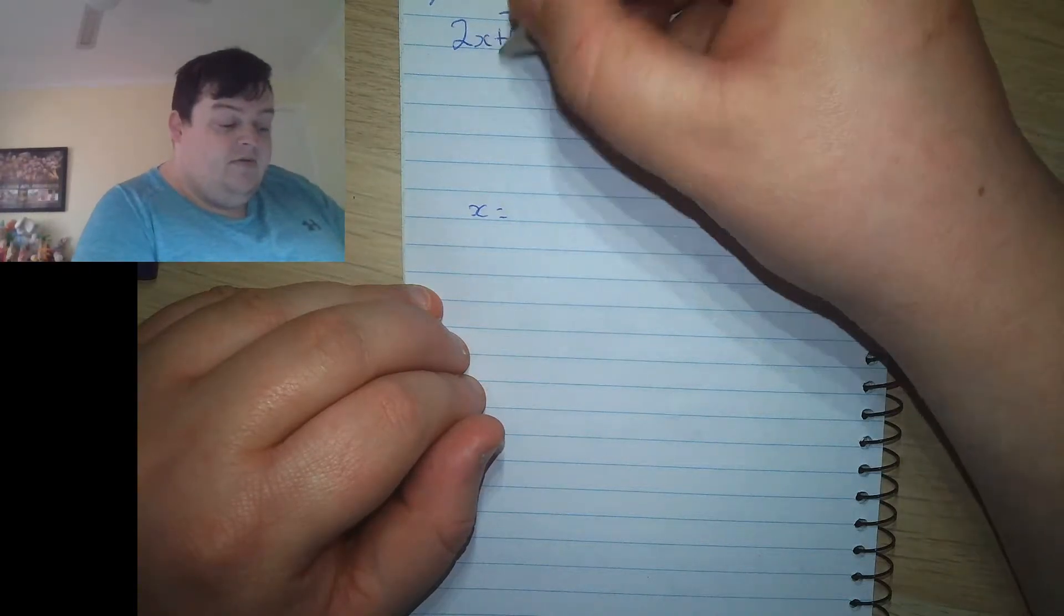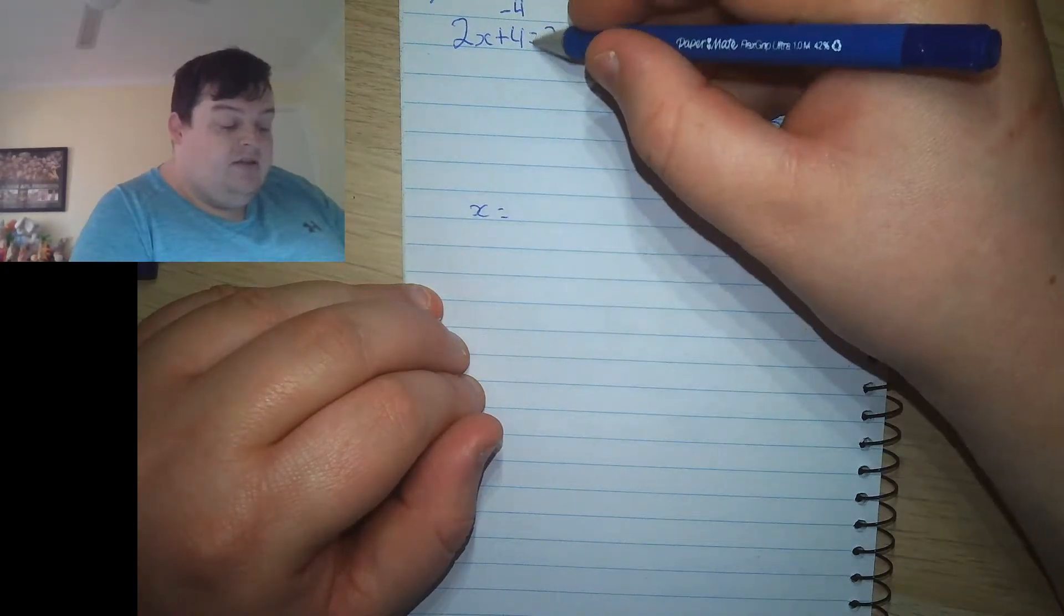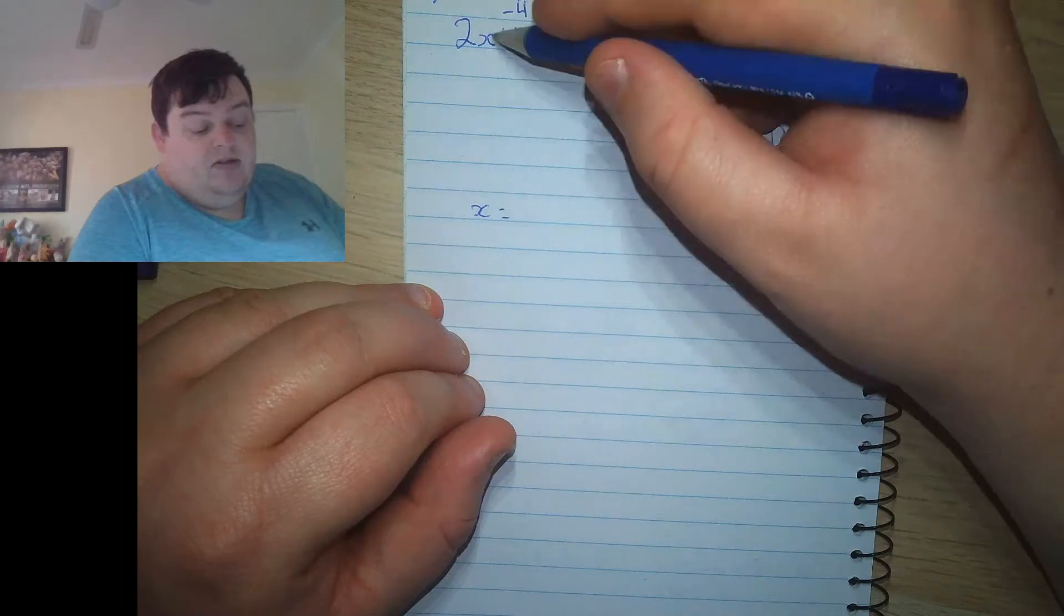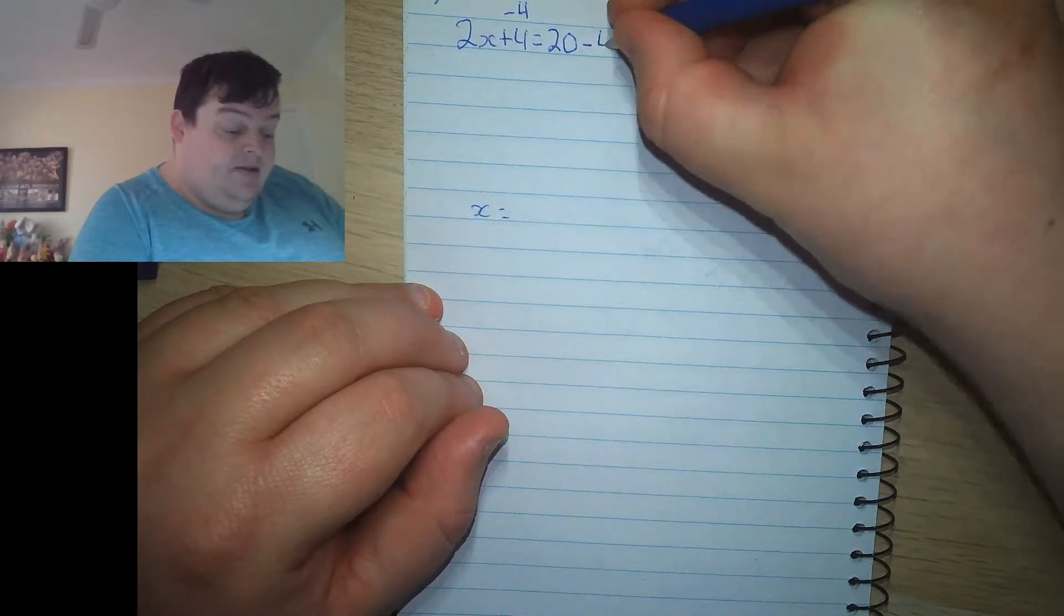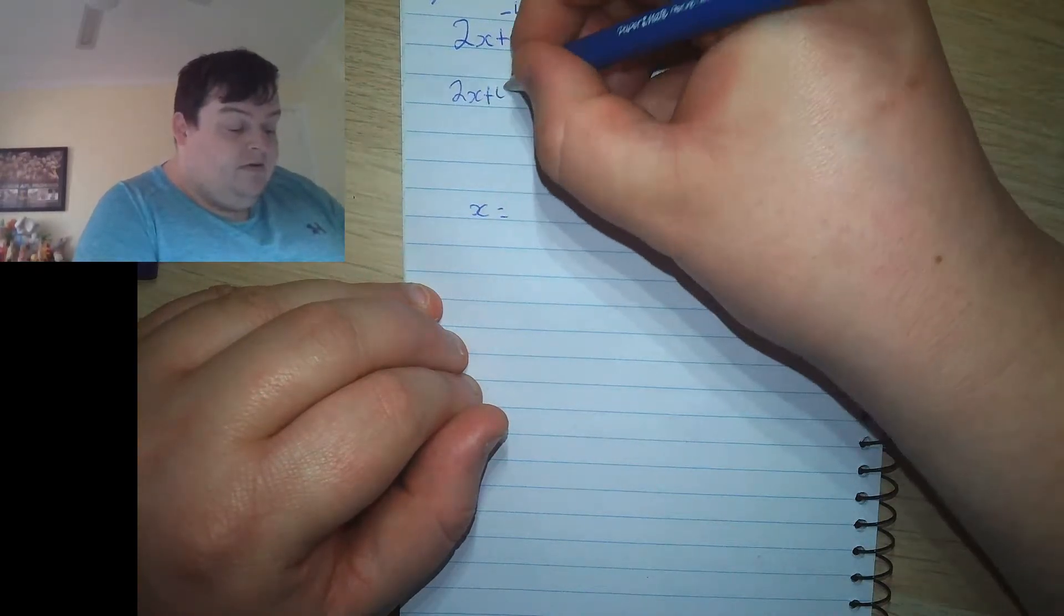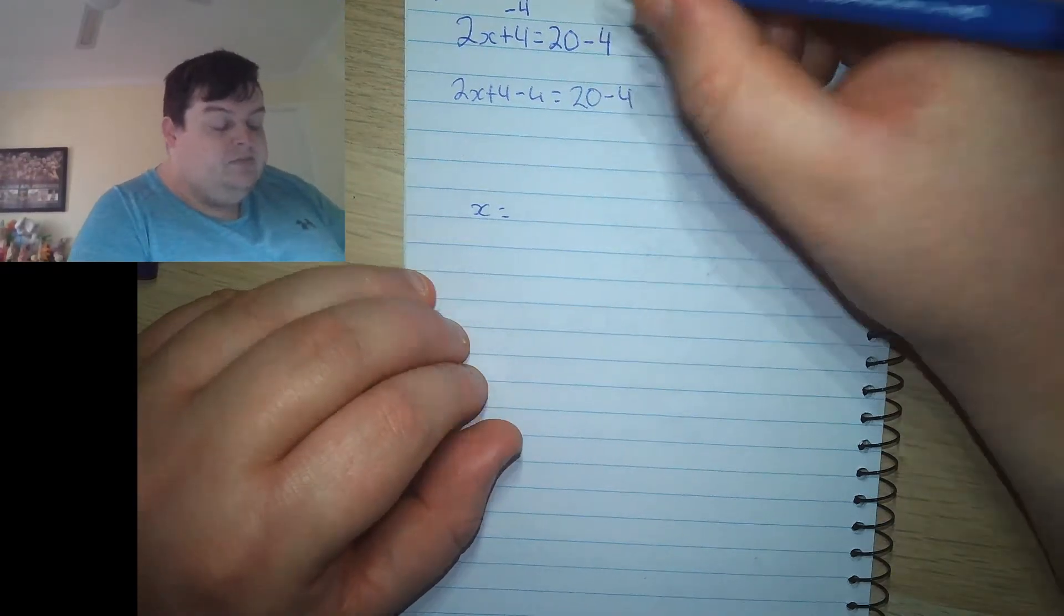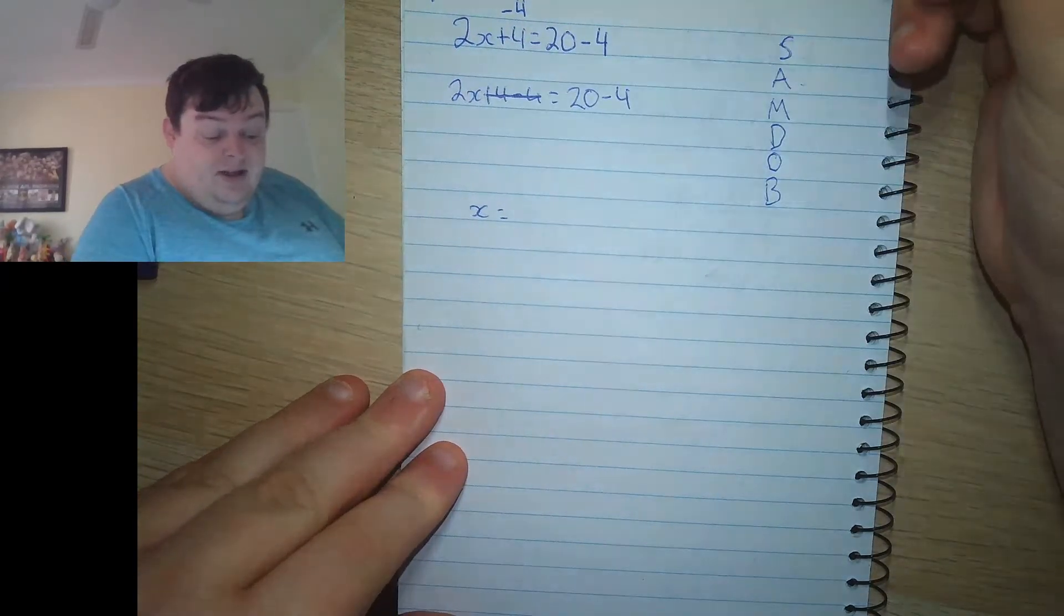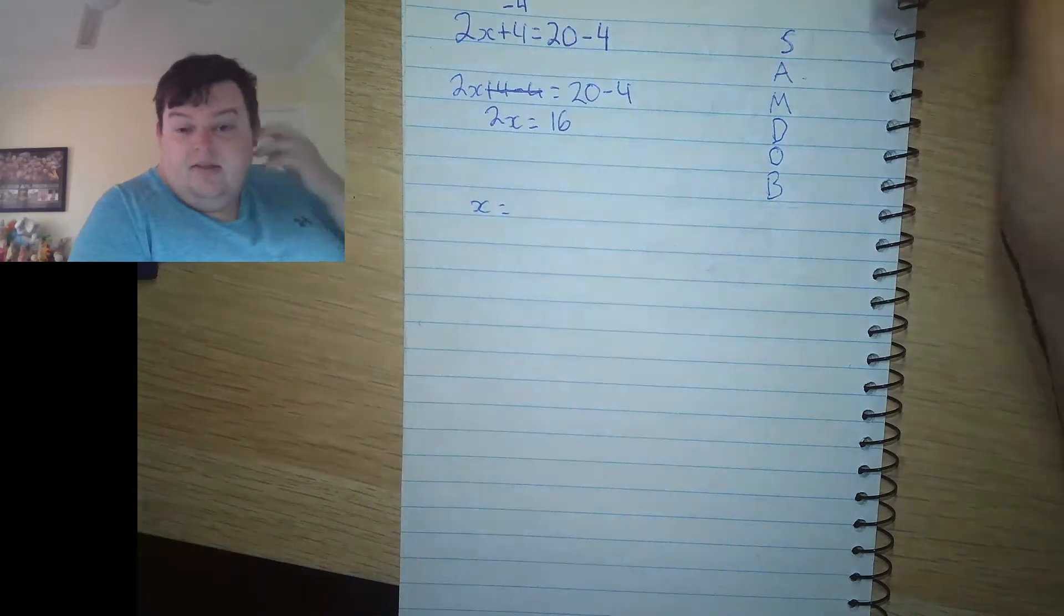So I'm subtracting 4 from this side of the equation. And in doing that, because this is an equal sign, and therefore both sides need to be equal. If I'm subtracting 4 from this side, I'm unbalancing this side, and therefore they're not equal. So to make it equal, I have to subtract 4 from my answer also. So now I have 2x plus 4 minus 4 equals 20 minus 4.